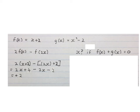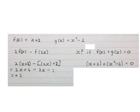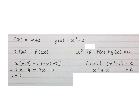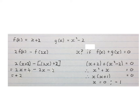The next question says: determine the value of X if F of X plus G of X equals 0. We write down F of X which is X plus 2, add G of X which is X squared minus 2, and equate them to 0. Simplifying gives a quadratic equation which we factorize to get two answers: X equals 0 or X equals minus 1.